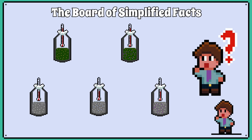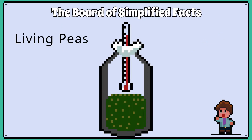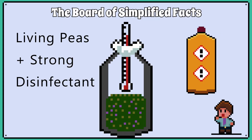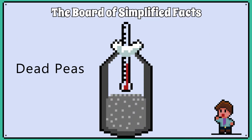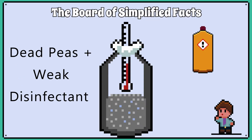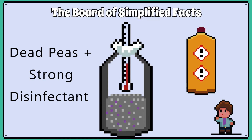I'm going to present a tricky version of this experiment to try and prepare you for the exam. We now have a setup where we have living peas, living peas with strong disinfectant, boiled peas, boiled peas with weak disinfectant, and boiled peas with strong disinfectant.